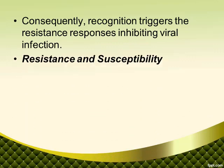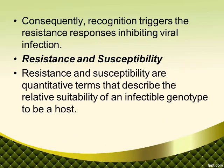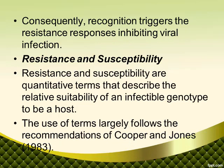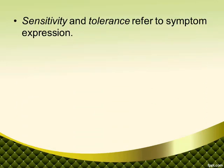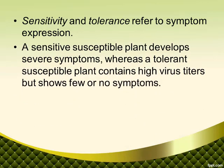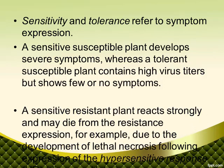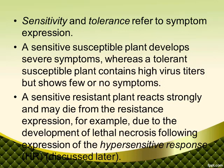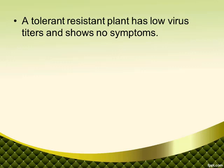Resistance and susceptibility: these are quantitative terms that describe the relative suitability of an infectable genotype to be a host. The use of these terms largely follows the recommendation of Cooper and Jones (1983). Sensitivity and tolerance refer to symptom expression. A sensitive susceptible plant develops severe symptoms, whereas a tolerant susceptible plant contains high virus titers but shows few or no symptoms. A sensitive resistant plant reacts strongly and may die from the resistance expression — for example, due to the development of lethal necrosis following expression of the hypersensitive response (HR).